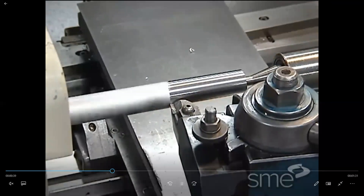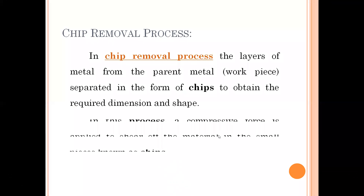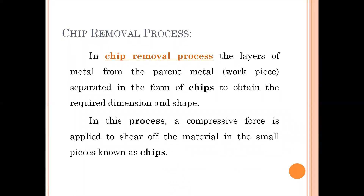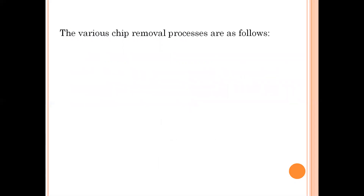Now we will see an example of the chip removal process. This is the base metal — we want to remove some material from it. The finished part results after material is removed in the form of chips — you can observe the material is removed in small segments, and those are called chips. In this process, a compressive force is applied to shear the material into small pieces known as chips. We are going to move the cutting tool against the rotating workpiece, applying compressive force to get the chips.